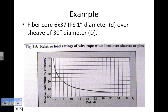For example, if you have a fiber core, 6x37, improved plow steel, one-inch diameter — that's the small d — and you're putting it over a sheave of 30 inches diameter, your D-to-d ratio would be 30 to 1. You'd probably be looking at about 94–95% efficiency, and you'd want to figure that into your maximum load calculation.